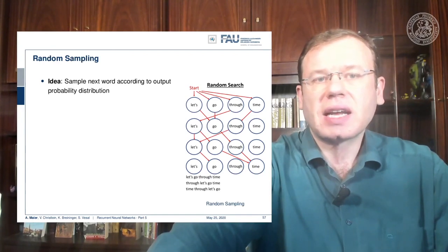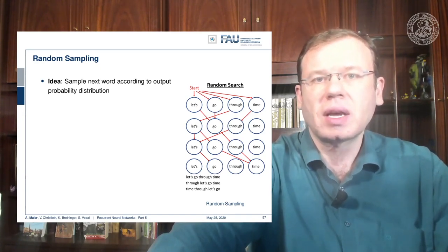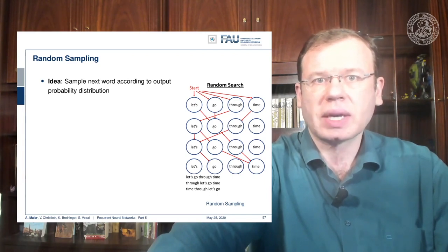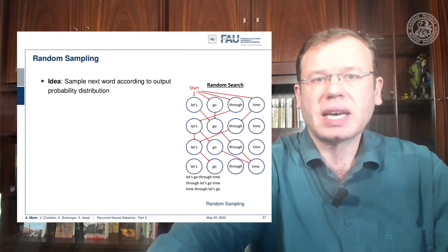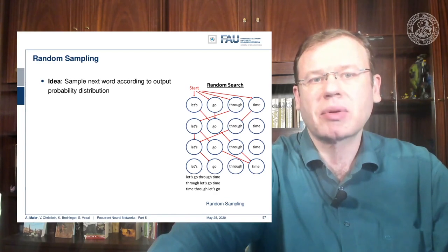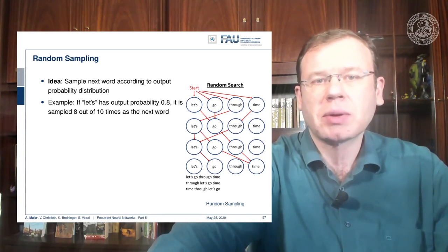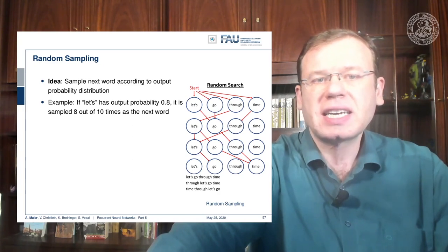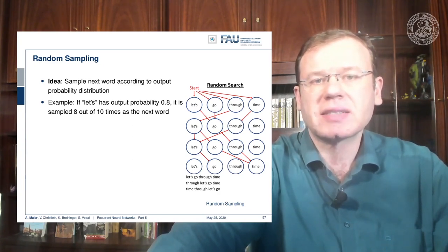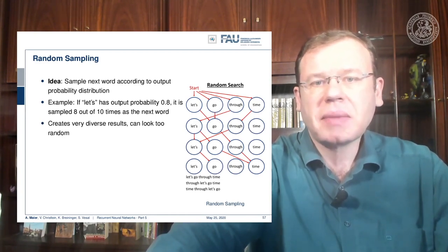Of course there's also other things like random sampling. Here the idea is that you select the next one according to the output probability distribution. You remember we encoded our vectors as one hot encoded vectors, and then we can essentially interpret the output of the RNN as a probability distribution and sample from this distribution. This allows us to generate many different sequences. If 'let's' has an output probability of 0.8, it is sampled 8 out of 10 times as the next word.